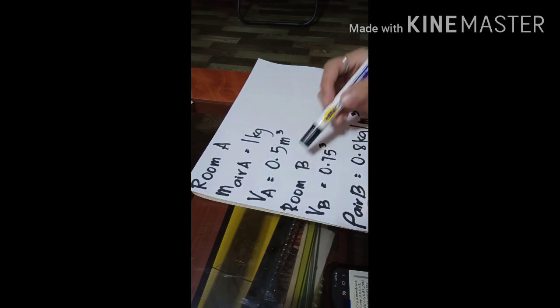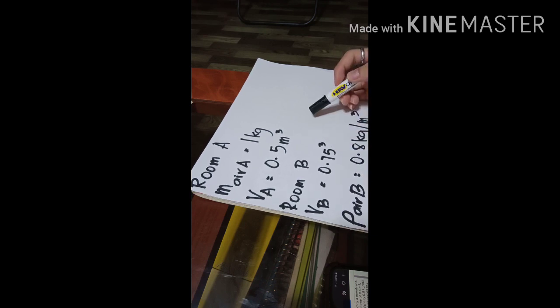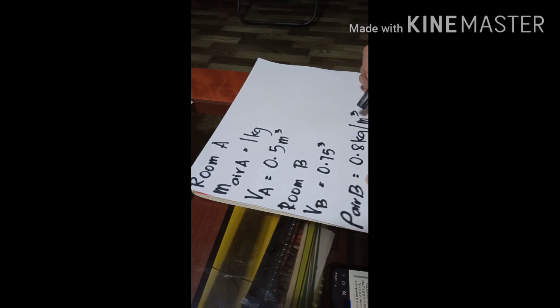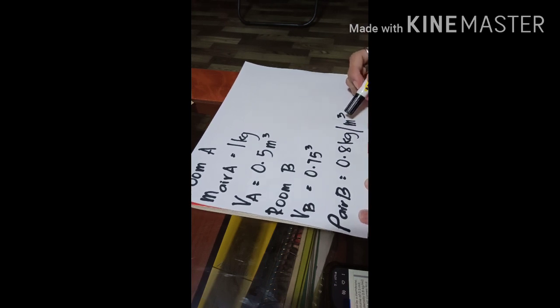In room B, V sub B equals 0.75 cubic meter, and density of air B equals 0.8 kilograms per cubic meter.